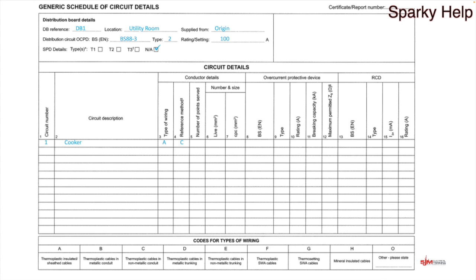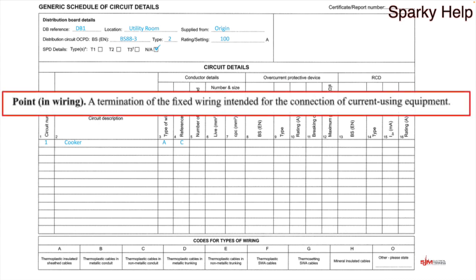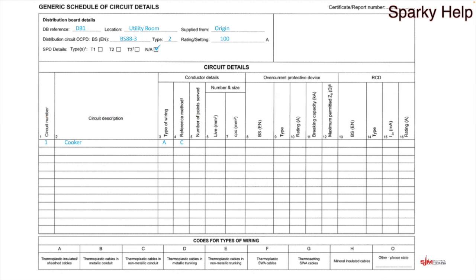Number of points served: I've tried to get clarification from the IET but they've never answered on what they classify as a number of points served. The definition within BS 7671 says a 'point in wiring' is a termination of the fixed wiring intended for the connection of current-using equipment. So for a cooker — unless you've got two cookers connected to one point, which is possible as long as you're within the regulations — we're just going to put in number one.